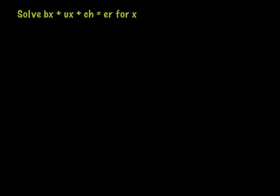Here's a fun one. We're going to solve bx plus ux plus ch equals er for x. So this one is all letters. And we need to get x all by itself. So what we want to do, and pay close attention here, we have x in two different terms. So what we want to do is take these two terms and we want to factor out the x. It's like the opposite of distributing.